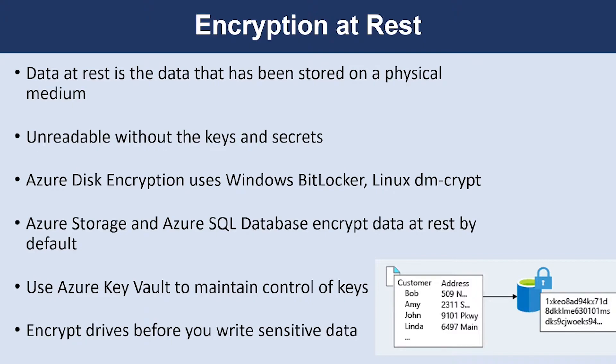The best practice for encryption at rest is to apply disk encryption to help safeguard your data. Using Azure Disk Encryption, it enables IT administrators to encrypt Windows and Linux IaaS VMs disks. Disk encryption combines the industry-standard Windows BitLocker feature and Linux DM-Crypt feature to provide volume encryption for the OS and data disks. For Azure Storage and Azure SQL Database, encryption of data at rest is enabled by default.